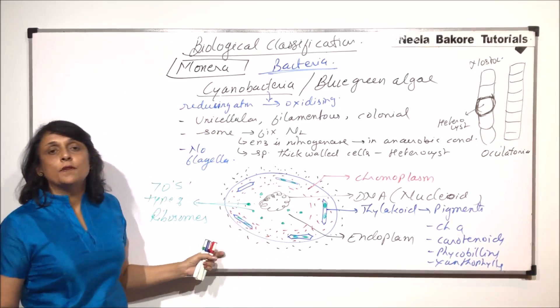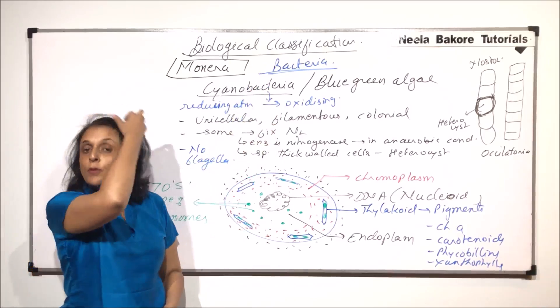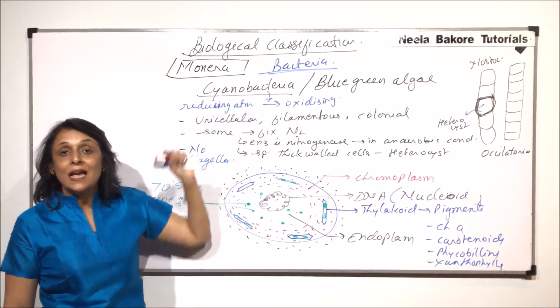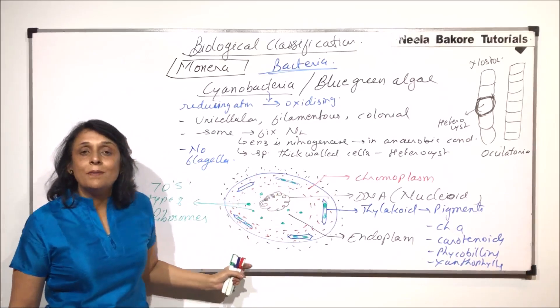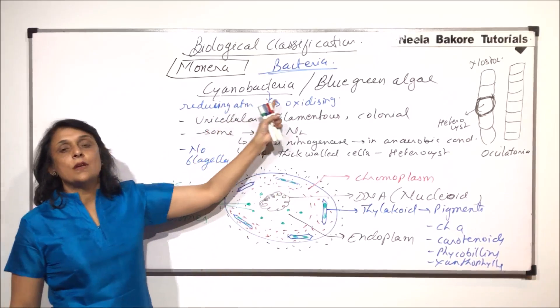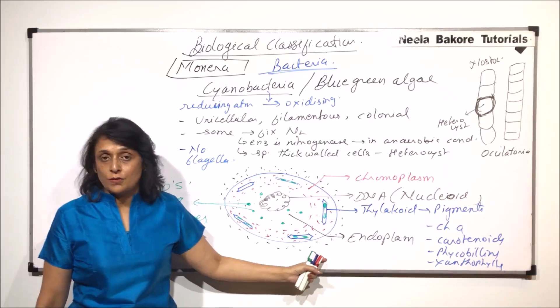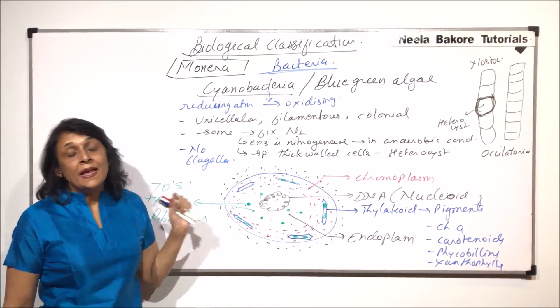When we talk of just bacteria, we are talking about simple prokaryotic cells or simple bacteria. And when we use the word cyanobacteria, which are called blue-green algae, then we have to remember that they are the ones who converted reducing atmosphere into the oxidizing by the process of photosynthesis. And for photosynthesis, they have pigments.